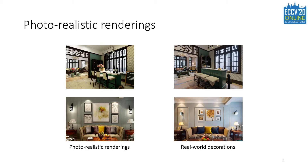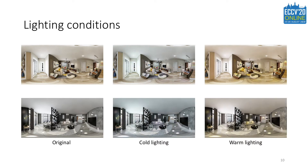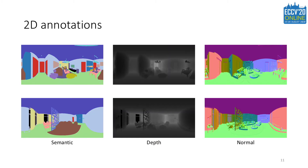Then we utilize industry-leading rendering engines to generate photo-realistic 2D images. We compare the rendered images with photos of real decoration guided by the design. For each room, we generate different configurations by removing some or all the furniture, and also modify the lighting setup to generate images with different temperatures. For each image, we also provide the semantic mask, the depth map, and the surface normal map.